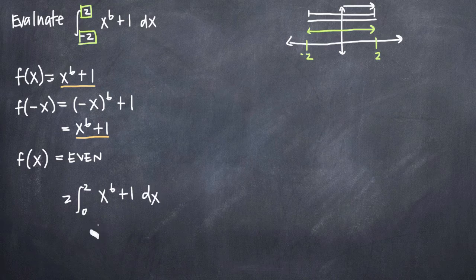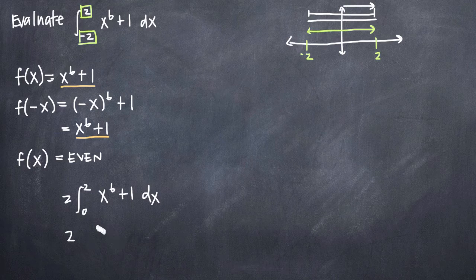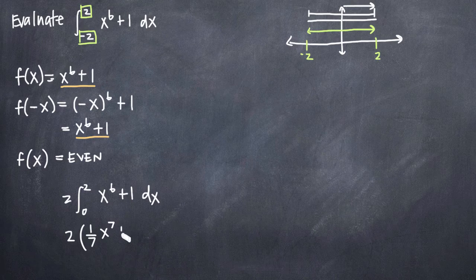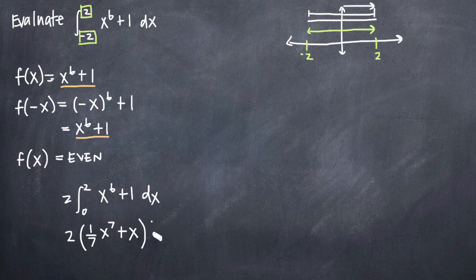Now we can just go ahead and integrate. So we'll get 1/7th using power rule here, 1/7th x to the seventh plus x will be our integral. And we're going to evaluate that on the range 0 to 2.